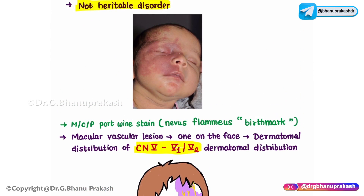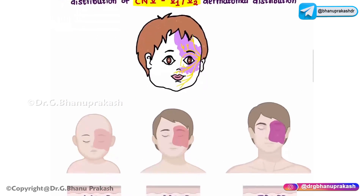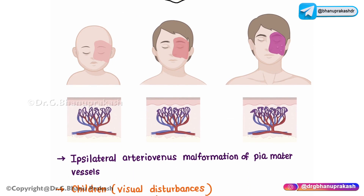This lesion does not blanch with pressure. This means the macular vascular lesion's color or appearance does not change when pressure is applied and released — that is the typical feature of this macular vascular lesion.